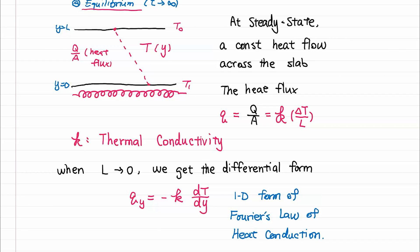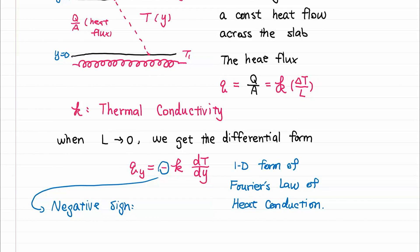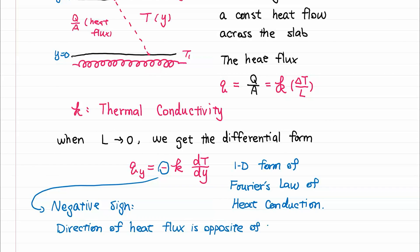There is a negative sign in Fourier's Law because the direction of heat flux is opposite to the temperature gradient. We know that heat flows from high temperature regions to low temperature regions, so the direction of heat flux is opposite to the direction of the temperature gradient. Thermal conductivity is a measure of how much heat is transferred through a material or substance.